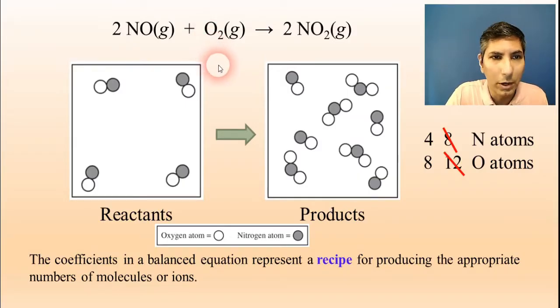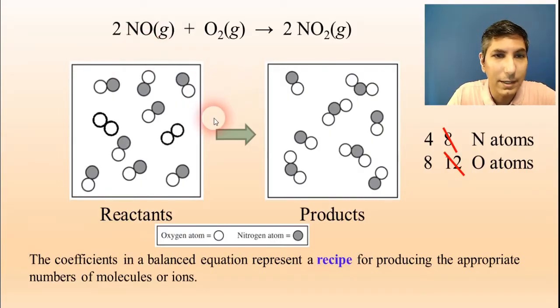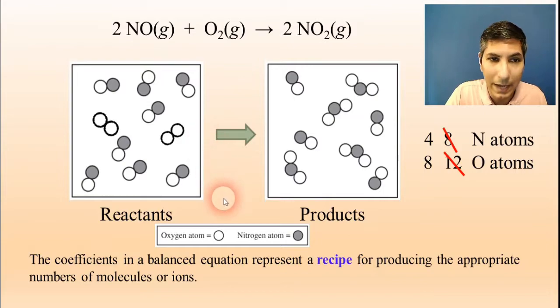And so the recipe here tells me that for every two molecules of nitrogen monoxide, I'm going to have one molecule of oxygen, O2. So I'm going to do that once. And so I'm going to draw two NOs and one O2. And that means that I'm down to two nitrogen atoms and four oxygen atoms left. So I can do that again and draw two more nitrogen monoxide molecules and one oxygen molecule. And now I've used up all my atoms.